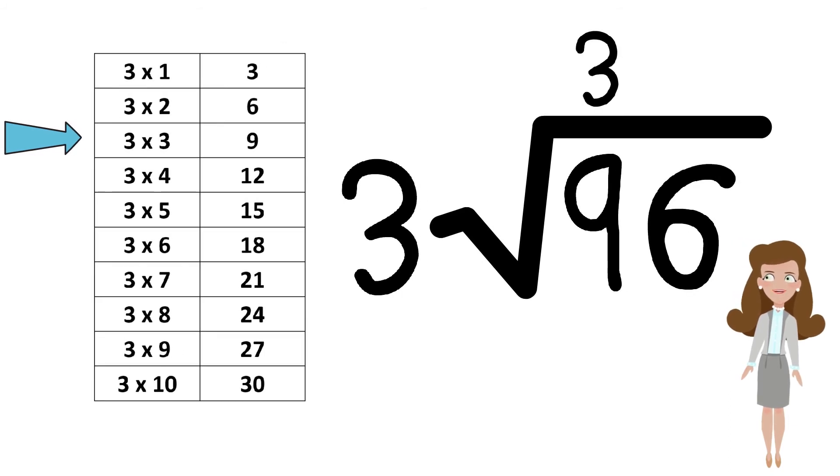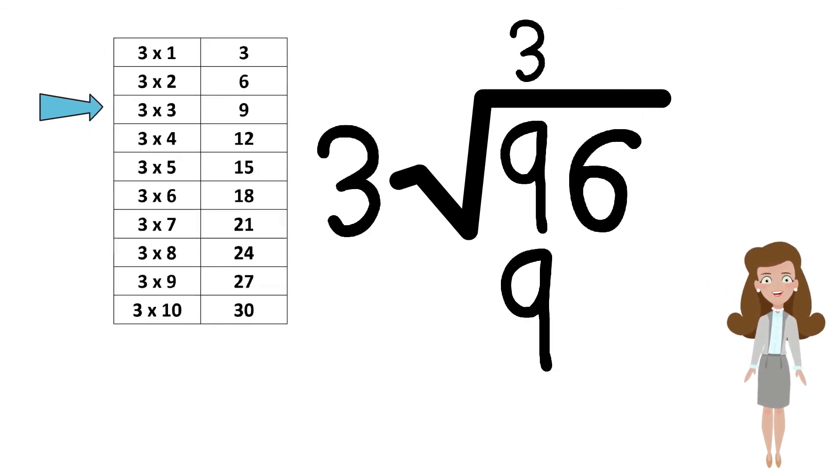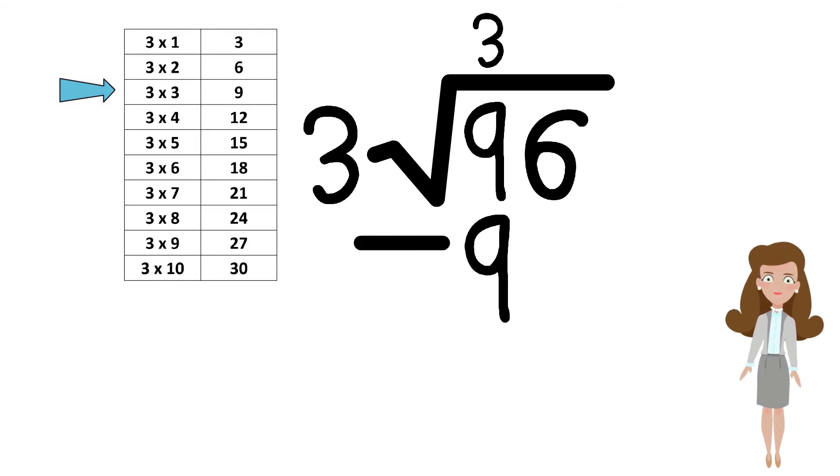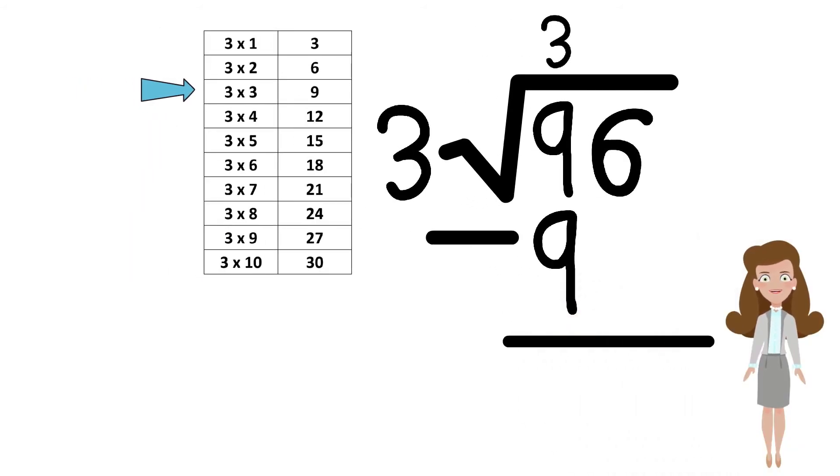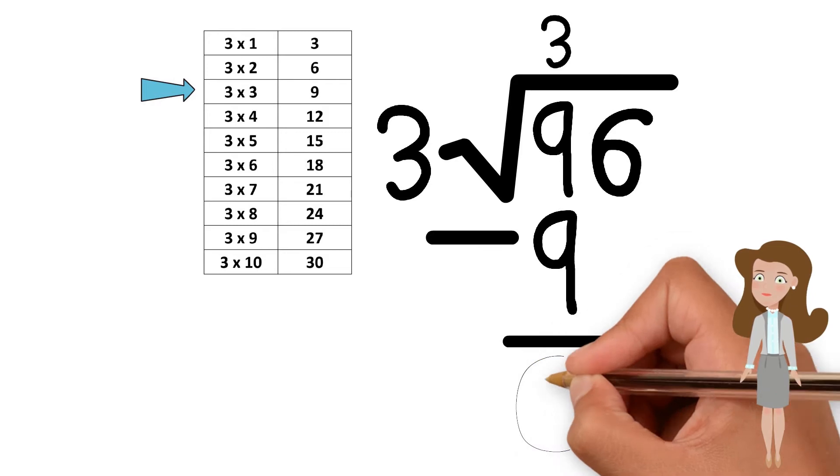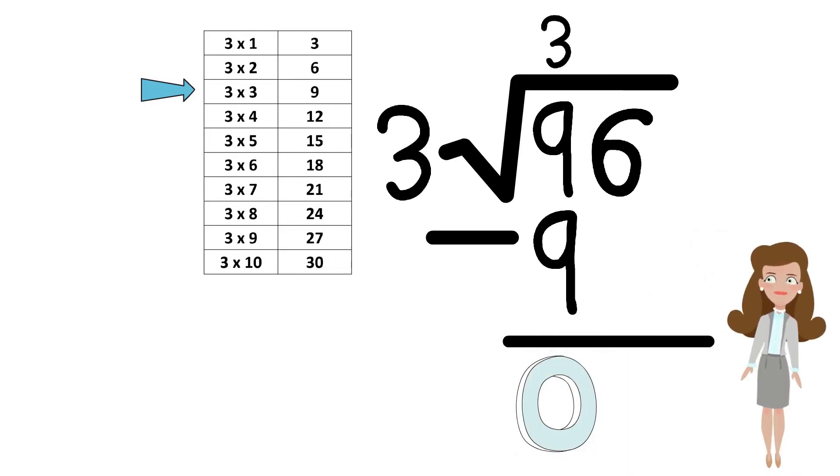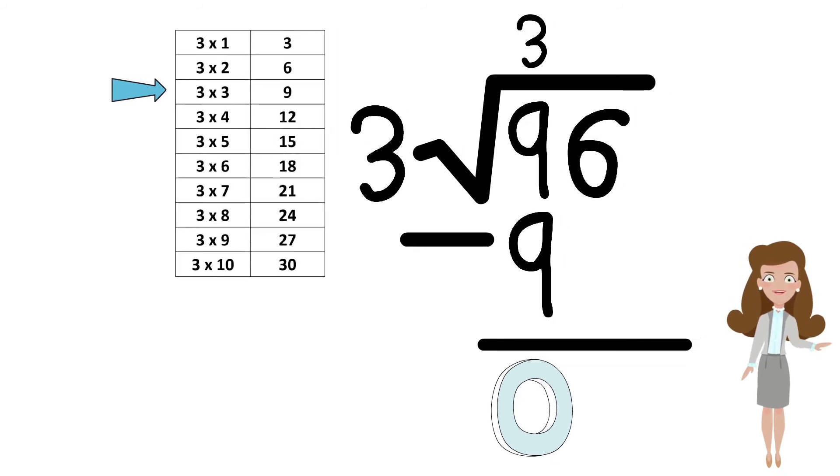Let's write 3 on top and the result of 9 below. Perform the subtraction and write the result of 0. Zeros in the front can be ignored unless it is the final answer. Now we will take the next digit.